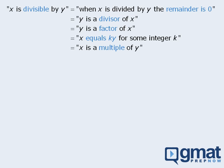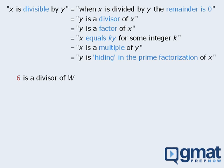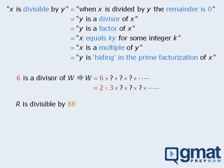Now, in an earlier lesson, we saw that there are several different ways to say that one number is divisible by another. We'll add another: if x is divisible by y, then y must be hiding somewhere within the prime factorization of x. For example, if 6 is a divisor of w, then the prime factorization of w must contain a 6 hiding in the form 2 times 3. Similarly, if r is divisible by 88, there must be an 88 hiding within the prime factorization of r — specifically in the form 2 times 2 times 2 times 11, since that is the prime factorization of 88.